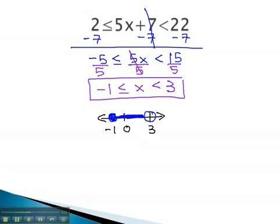We can also represent that graph using interval notation. The small number is negative 1, comma the big number is 3.